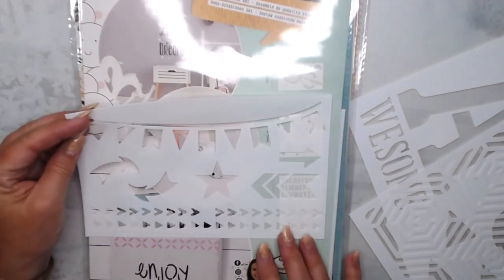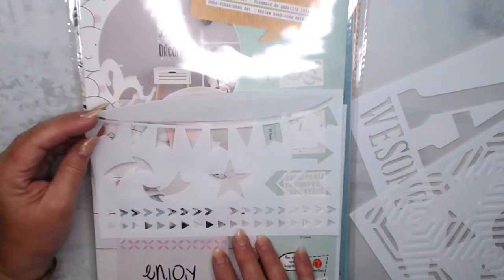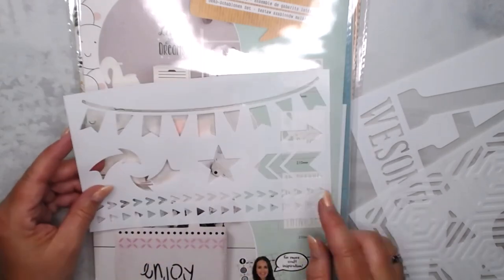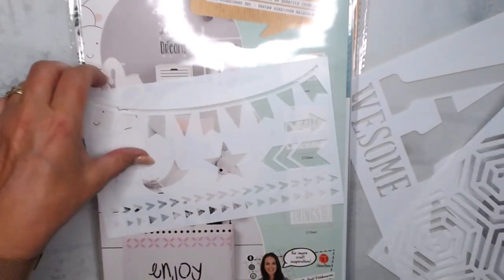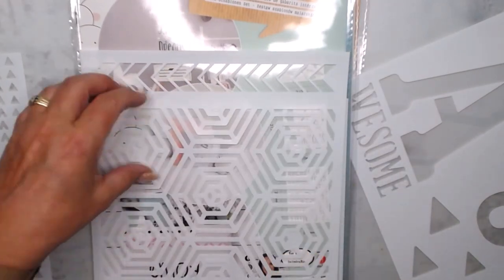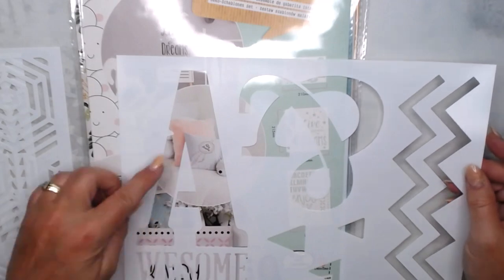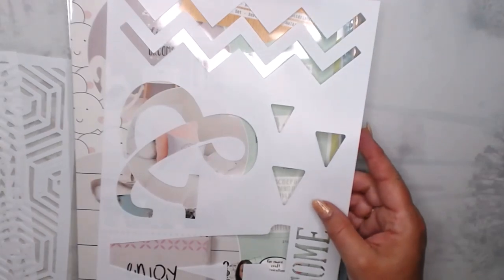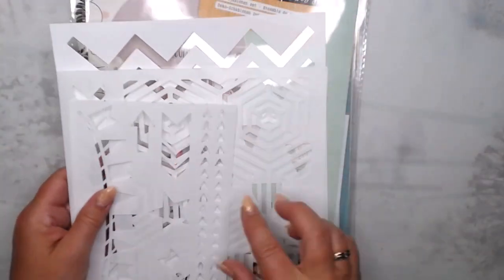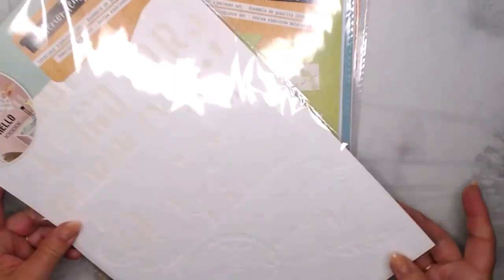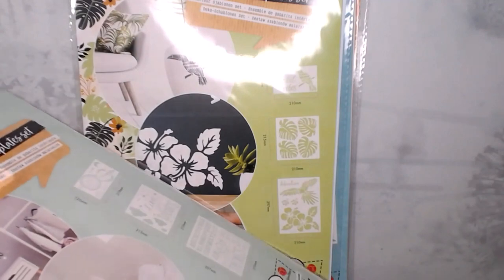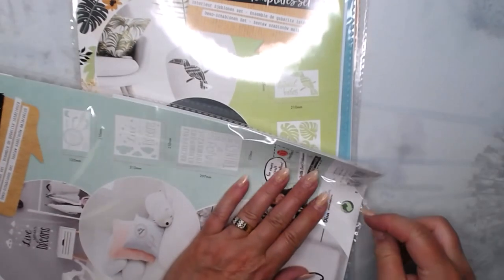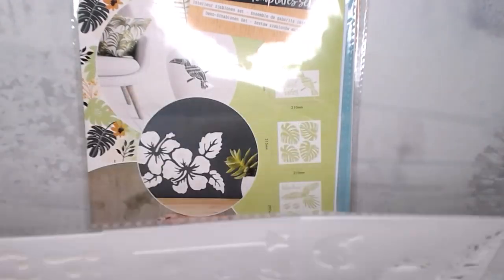So this one has a ribbon and stars and all kind of things. Arrows. A graphic thing. Awesome. And some other, so it's a kind of graphic designs. I like it. These sizes. Let's open the other one.